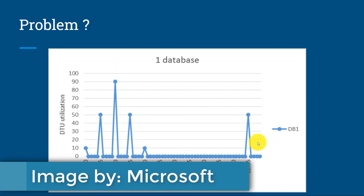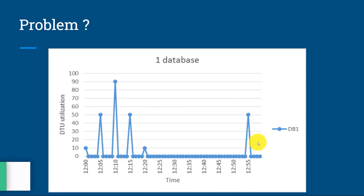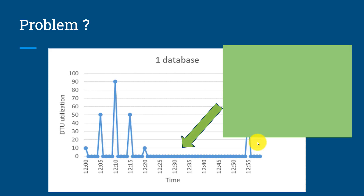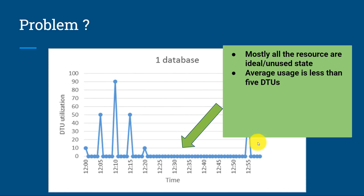Now let's understand the problem in the single database deployment model. Here I have deployed DB1 and assigned 100 DTU. If you look at this chart, there are two problems. Most of the time, my resources are idle or unused — my database is not using the DTUs — and the average utilization of my database is less than 5 DTUs.